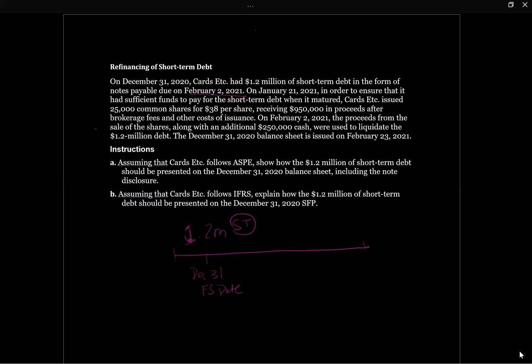Then we're going to see what happens afterwards. On January 21st, which is our next date, they issued shares and they got $950,000 for shares. And then on February 2nd, they got an extra $250,000 of cash. And the actual financials were issued on February 23rd.